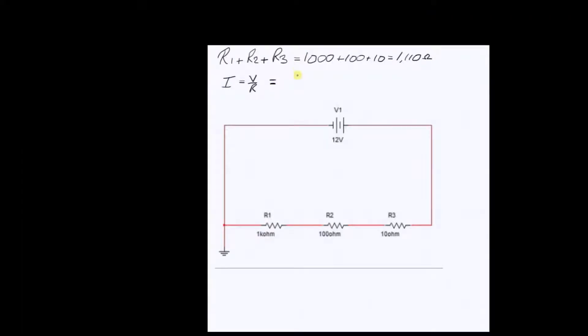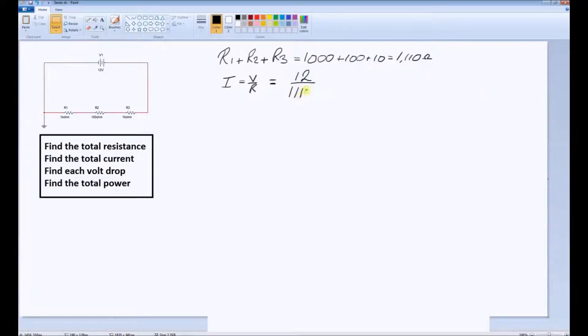We have a voltage of 12 volts DC, and a resistance of 1110 ohms. I've got an online calculator here to help us with the next part.